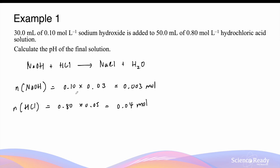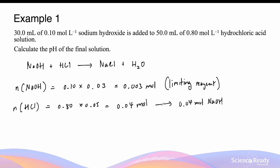Since sodium hydroxide and hydrochloric acid react in a 1 to 1 stoichiometric ratio, 0.04 moles of hydrochloric acid would require the same number of moles of sodium hydroxide to react. However, we don't have this many moles of sodium hydroxide — we have way fewer moles: 0.003 compared to 0.04. This means the sodium hydroxide is the limiting reagent, and that makes the hydrochloric acid what's in excess. So the pH of the final solution will be less than 7, making it acidic.